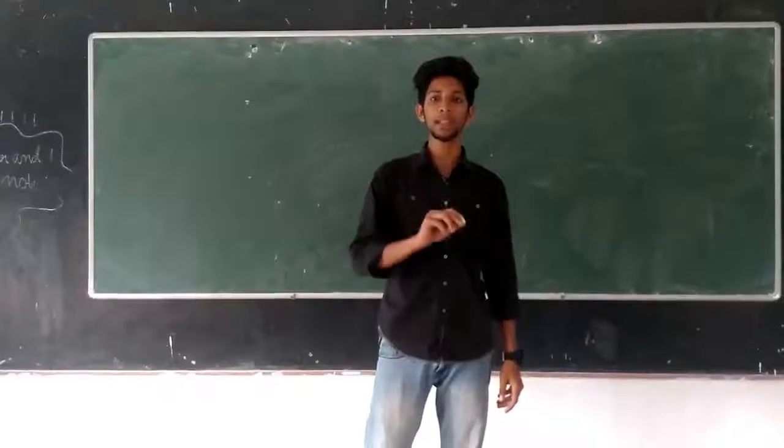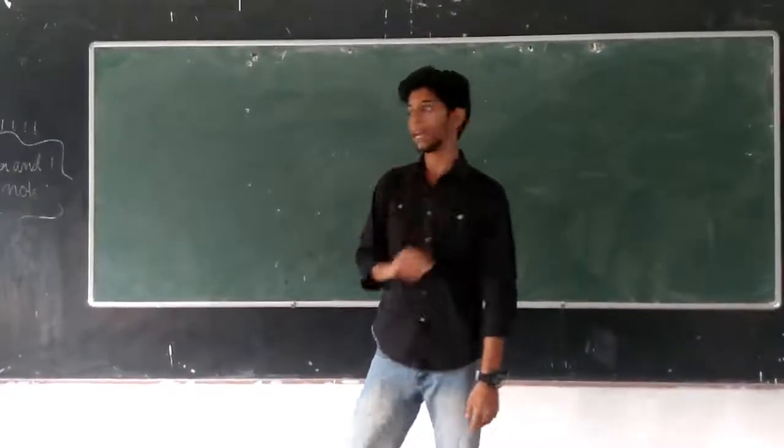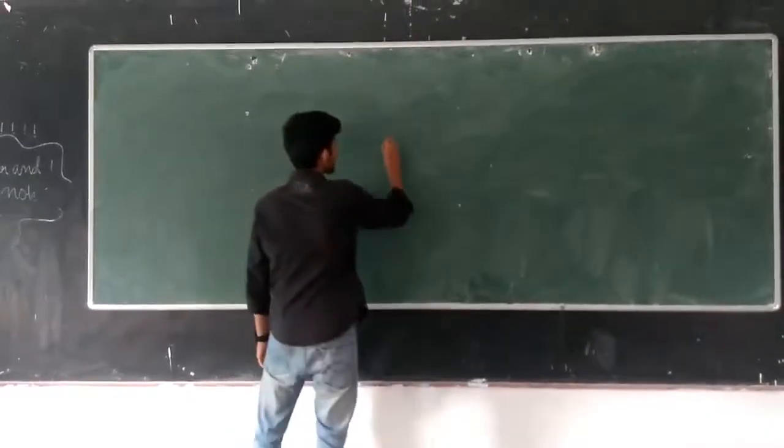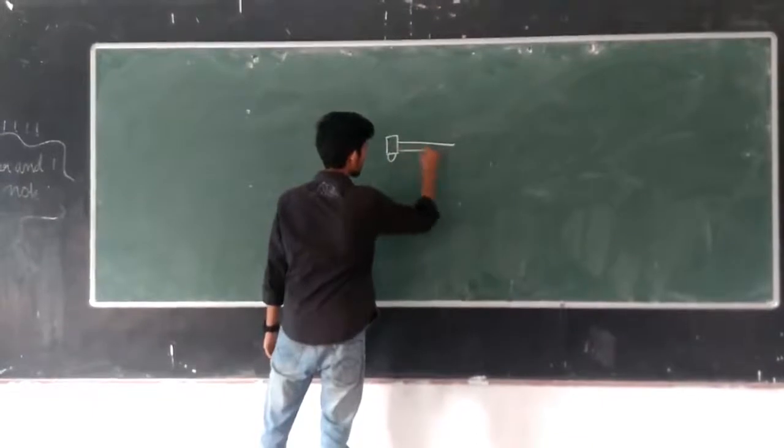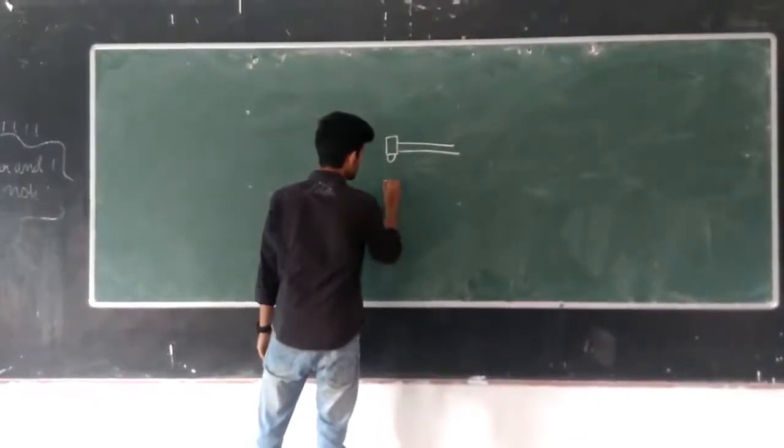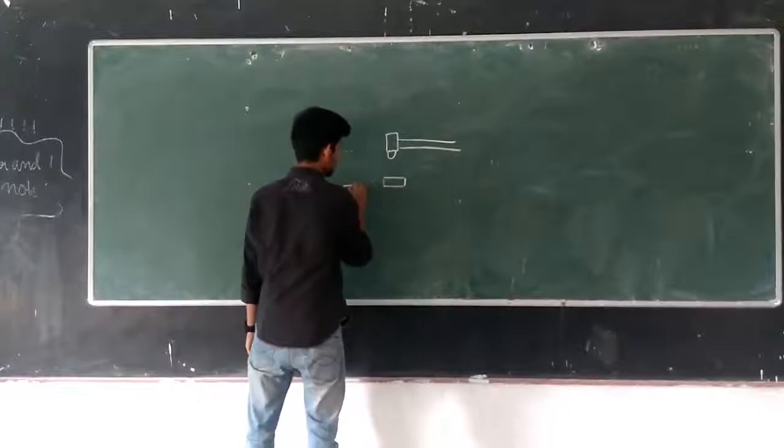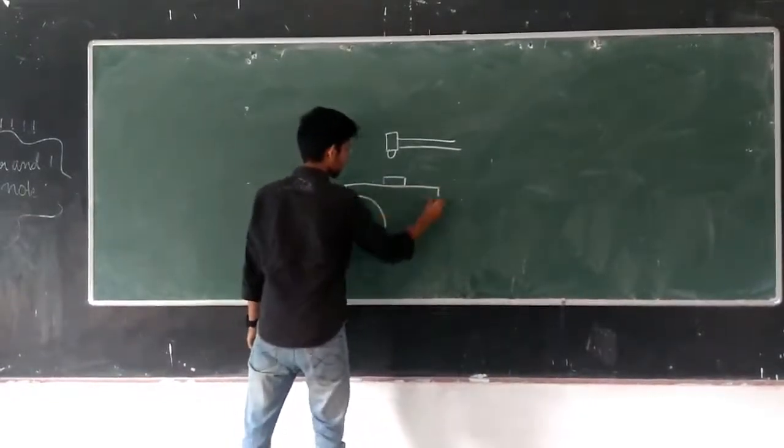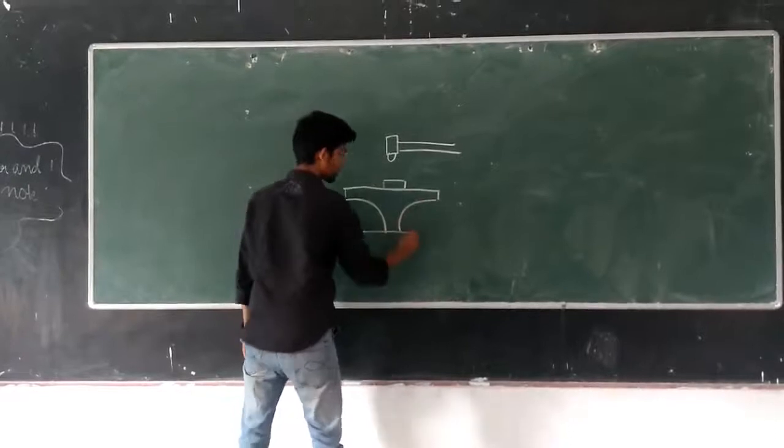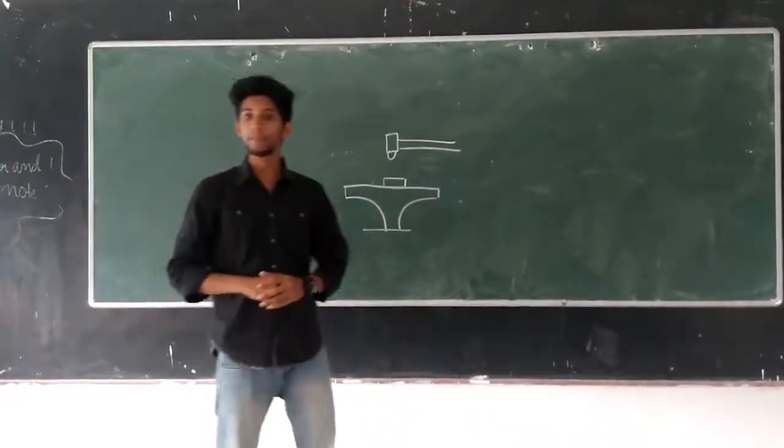We can explain the percussive welding in a small diagram. This is a hammer or impact hammer. Then the workpiece. Then the workpiece. This is the workpiece. The workpiece is fixed in an anvil.